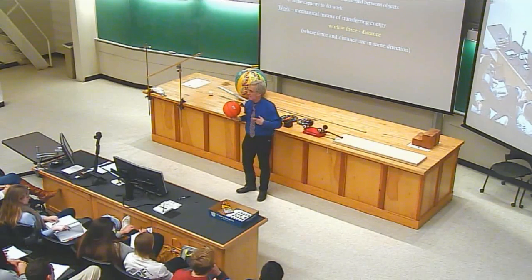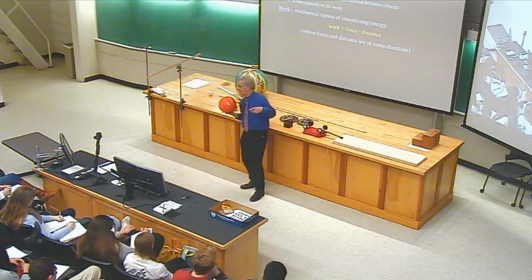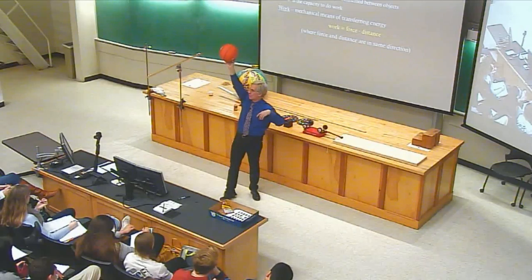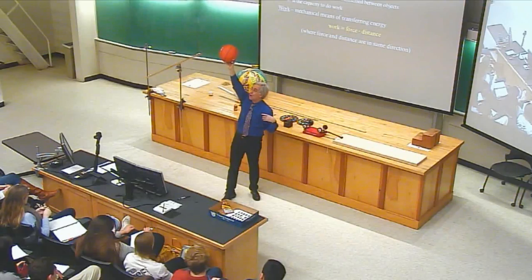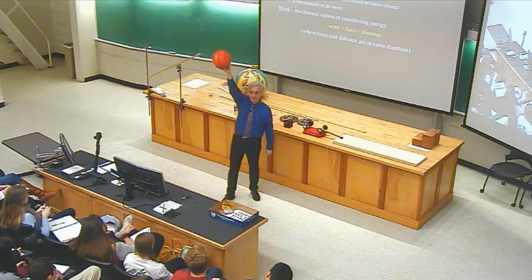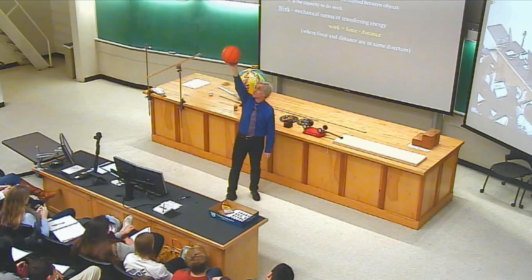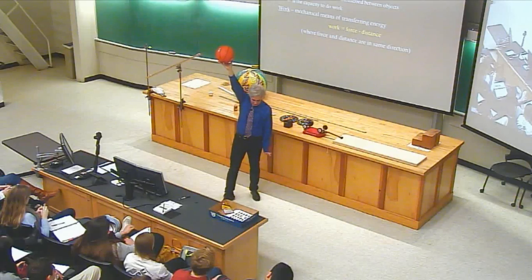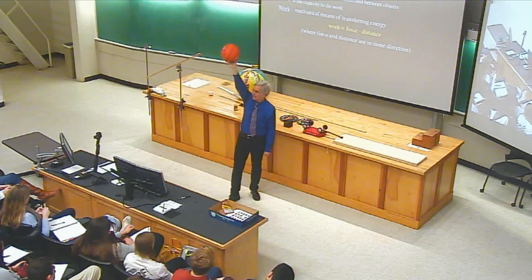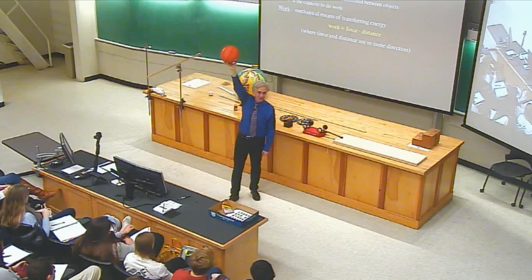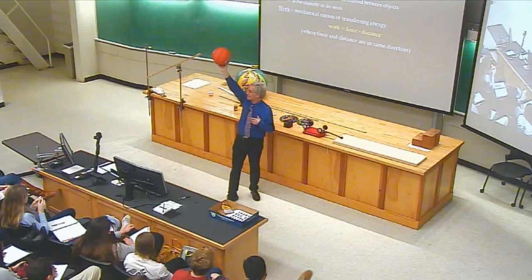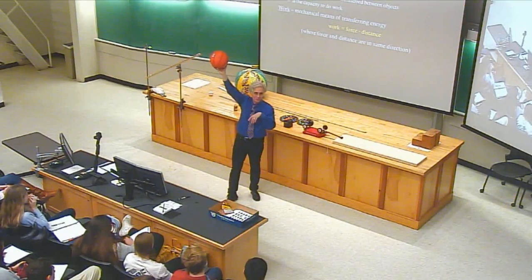We can look at the transfer from the perspective not just of me doing work on the ball, but also from the ball's perspective. The ball is pushing on me in the downward direction, and my hand moves in the upward direction. So from the ball's perspective, it's pushing down on me and I'm moving up — it's doing negative work on me. It did three joules of negative work on me as I did three joules of positive work on it. My energy went down and the ball's energy went up by the same amount. I lost three joules, it gained three joules — a full transaction.